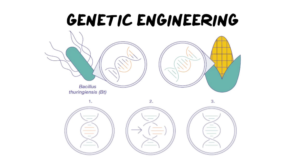So let's get into genetic engineering. Genetic engineering is a form of biotechnology where we are changing the genetics of an organism to suit the needs of humans. We are changing organisms so that they can do something for us. Some classic examples are how we have genetically engineered bacteria to create substances for us, and also how we have genetically modified and engineered food as well.